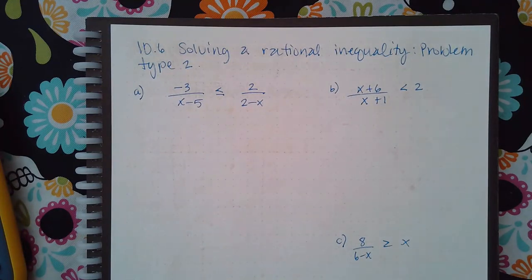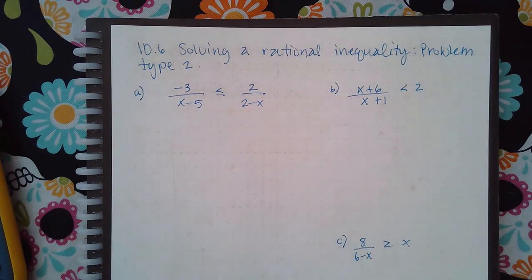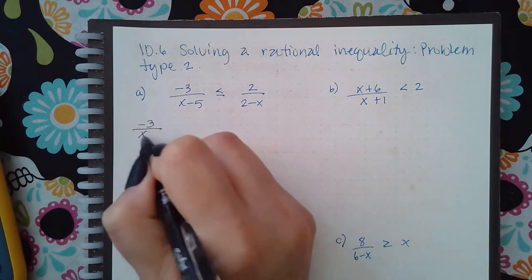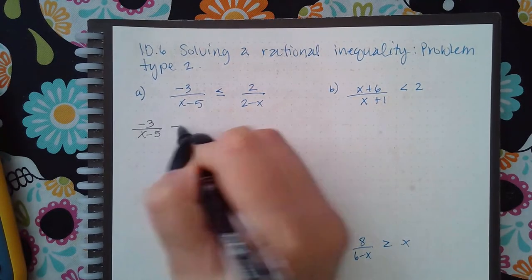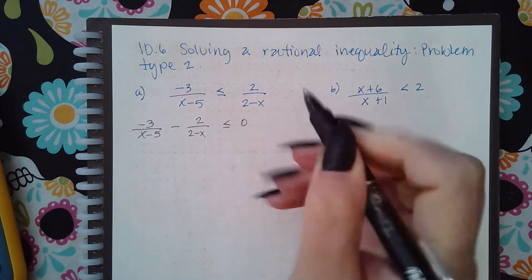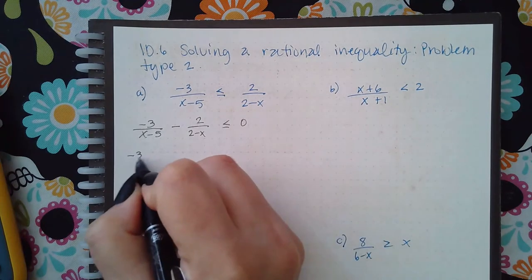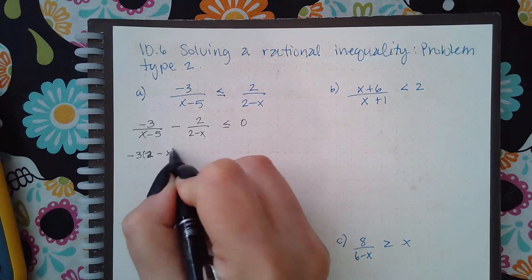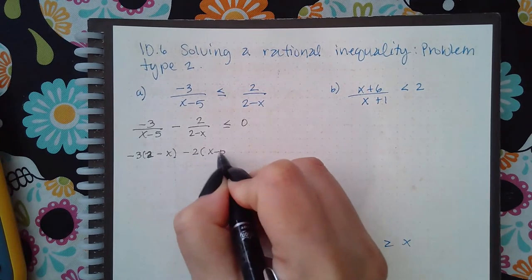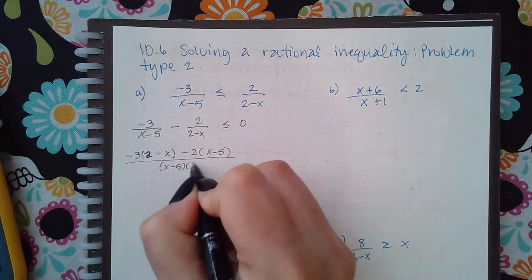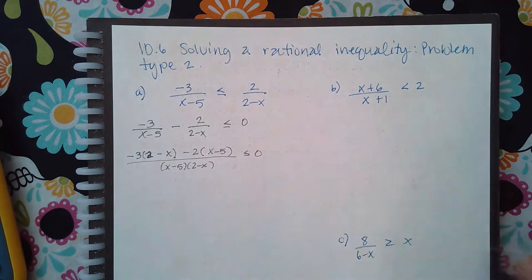Here we have solving a rational inequality problem type 2. Just like problem type 1, you have to have it equal to 0. So I'm going to have negative 3x minus 5 minus 2 over 2 minus x, and I do have to get a common denominator. I'm going to end up with negative 3 times that denominator minus 2 times the other denominator, and then I should have both denominators at the bottom.